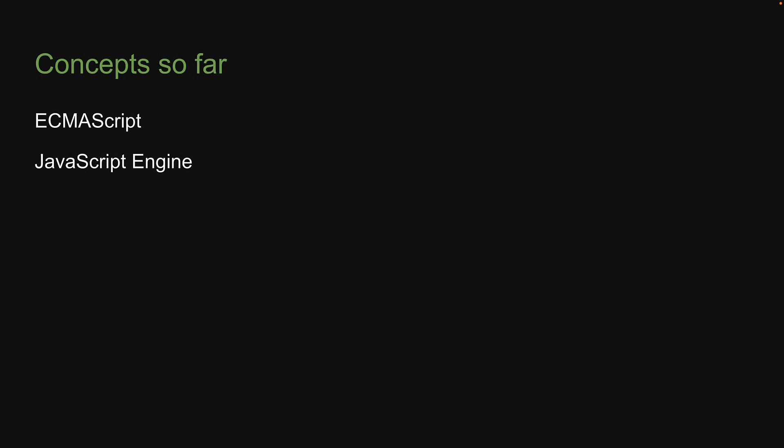So we have learned what is ECMAScript, which in turn helped us understand what is a JavaScript engine, which in turn helped us understand what is a JavaScript Runtime. With this knowledge in place, let's now go back to the definition of what is Node.js and see how the Node.js Runtime is different to that of the browser's Runtime. I'll see you in the next one.